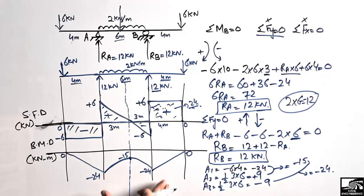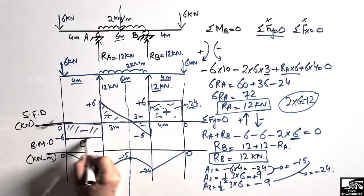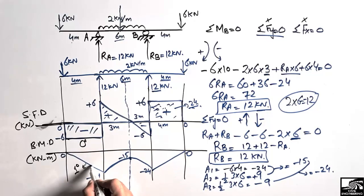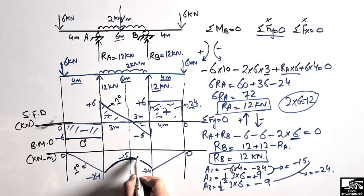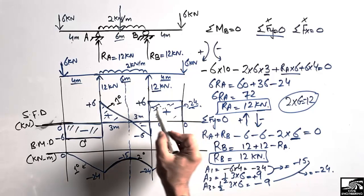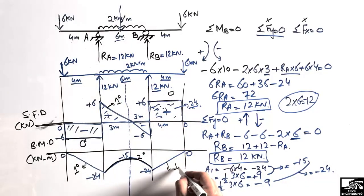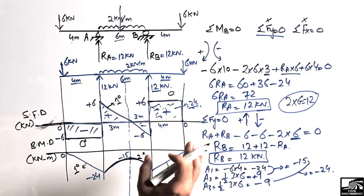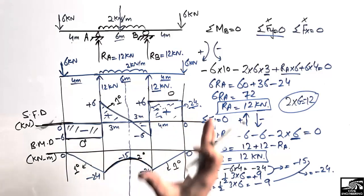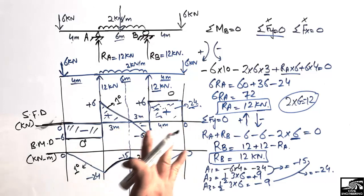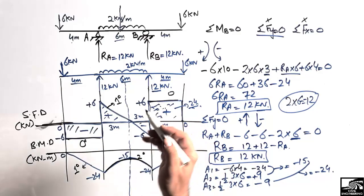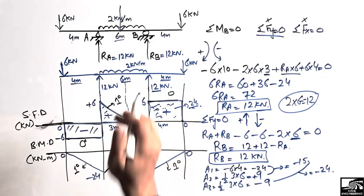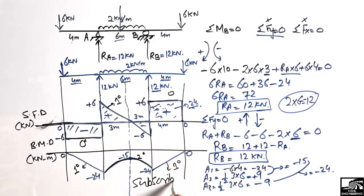An important rule: the bending moment diagram is always one degree higher than the shear force diagram. Where the shear force is a zero-degree line (horizontal), the bending moment is a first-degree line (linear). Where the shear force is a first-degree line (linear, due to UDL), the bending moment is a second-degree curve (parabola). Always remember the bending moment diagram is one degree greater than the shear force diagram. Thank you for watching — please subscribe to our channel.